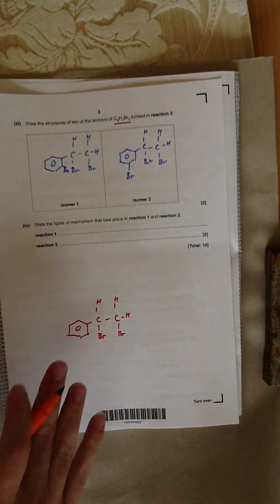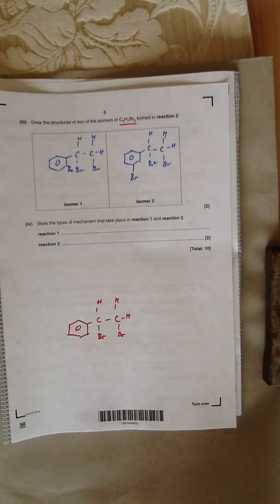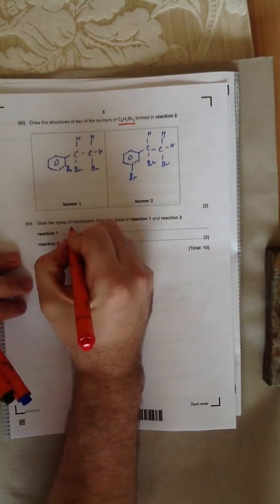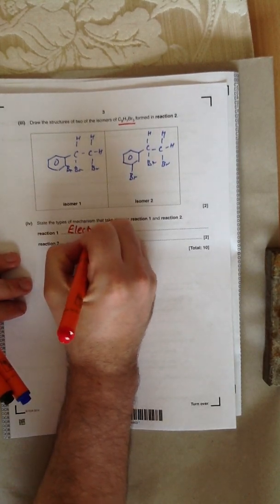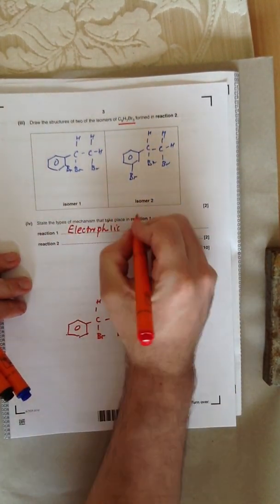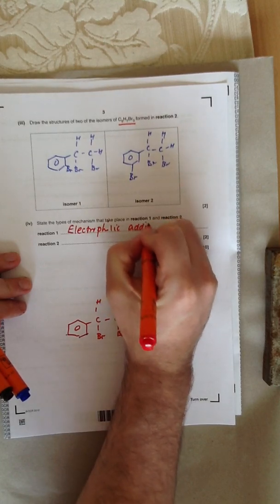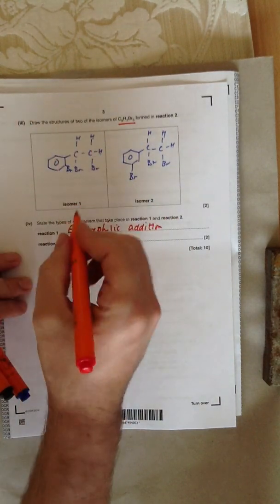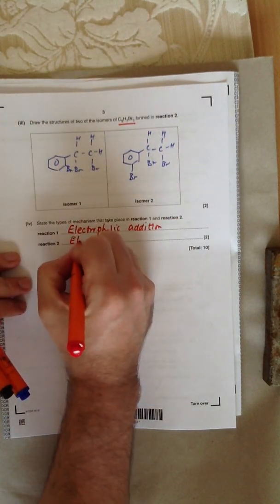The question concludes by saying, state the type of mechanism that takes place in reaction 1 and reaction 2. Reaction 1 is when you're adding bromine to an alkene double bond. That is electrophilic addition. One L in electrophilic at the end, one at the start. Reaction 2 is when you're brominating onto an aromatic ring, and that's electrophilic substitution.